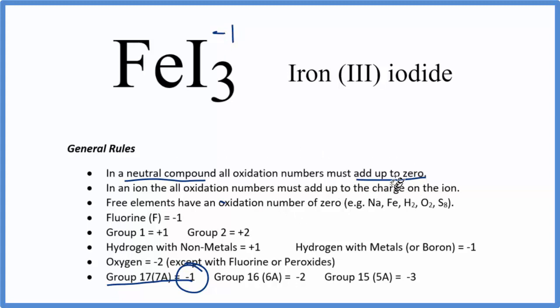Remember that everything adds up to zero. So we have 3 times minus 1. That gives us minus 3. So the iron has to be plus 3 for everything to add up to zero.